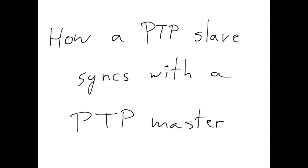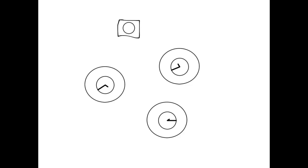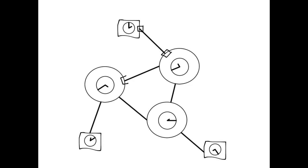In this video, I'm going to describe how a PTP slave synchronizes with a PTP master. Let's start by looking again at a concrete example: a network with boundary clocks, ordinary clocks, links and ports. As we know, in such a network, some ports will be in the master state and others will be in the slave state. Moreover, to obtain a tree topology on which a master-slave hierarchy can be established, loops in the network are eliminated by having some ports be in the passive state.